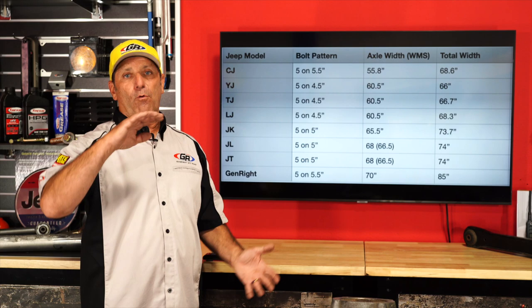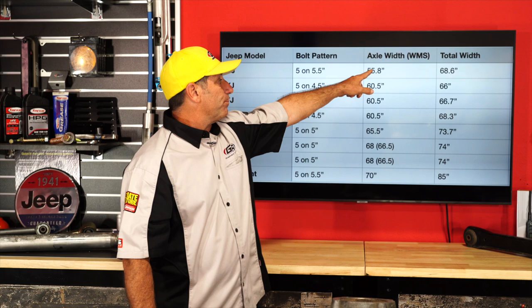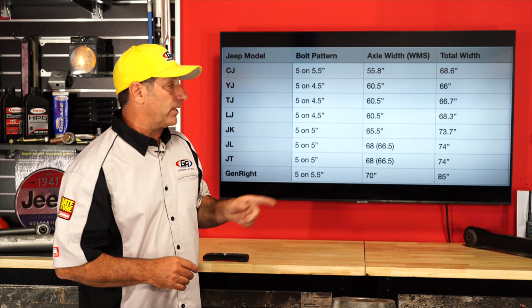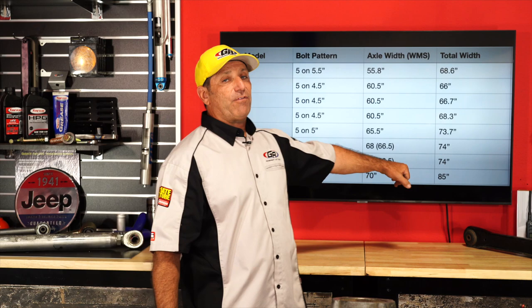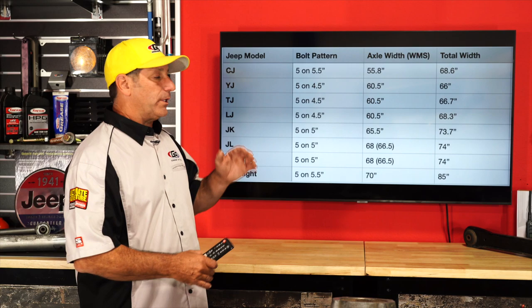We mentioned WMS — you're going to hear us refer to this term quite often. The total width at the bubble of the tires comes out to 85 inches — that's with a 1350 wide, 40-inch tall tire, just for reference.